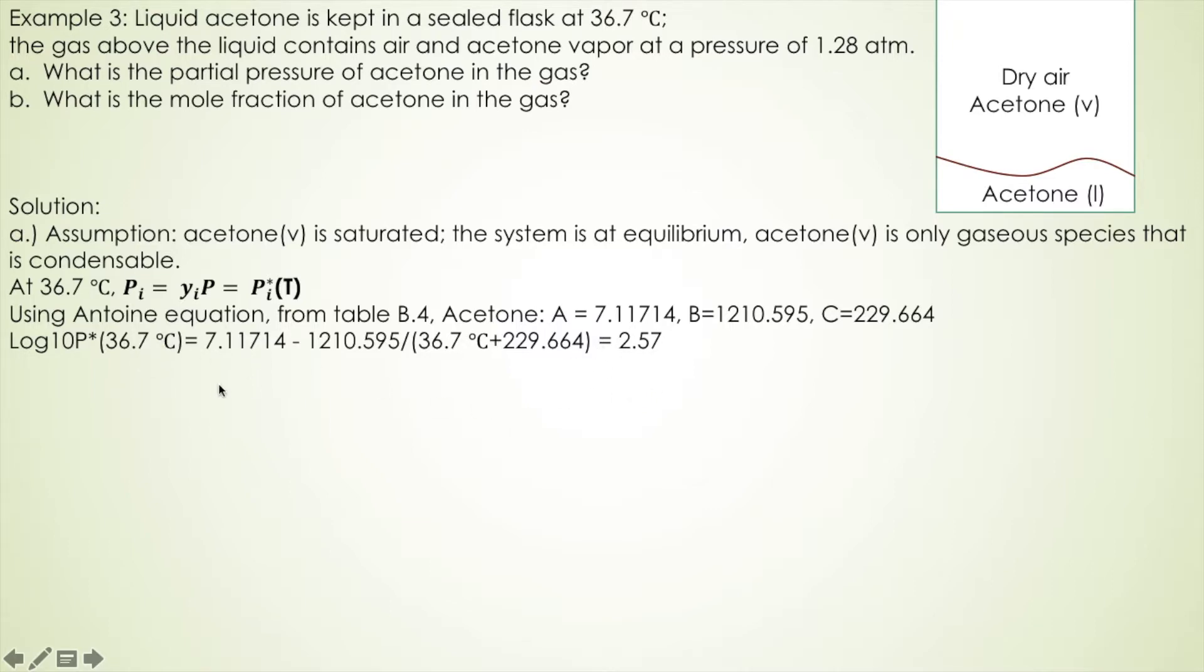And at 36.7 degrees Celsius given, then you found a log vapor pressure is 2.57, and vapor pressure is 10 to the power of the number you just found. Then you get vapor pressure.